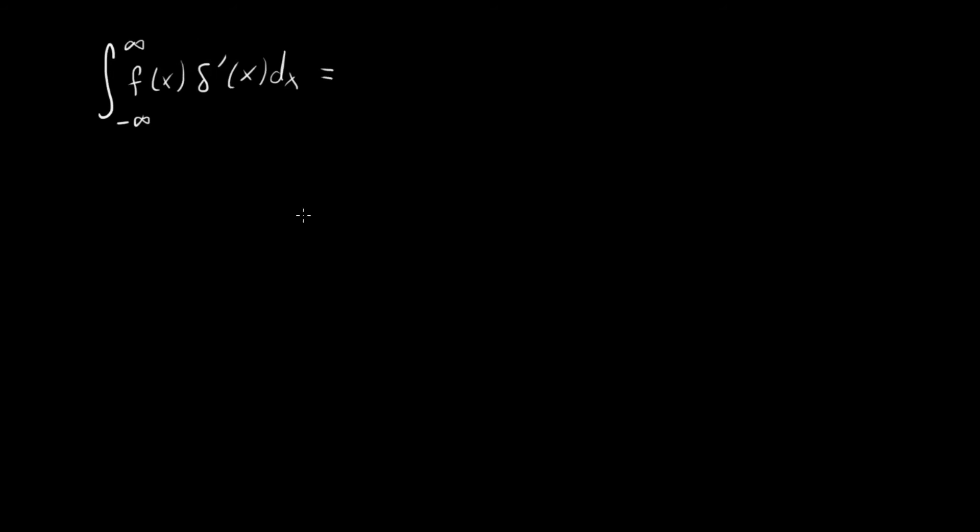Well, the thing that we always do whenever we see a derivative we don't want is use integration by parts. And so if we use integration by parts on this, what are we going to get? We're going to get f of x delta of x evaluated from minus infinity to infinity minus the integral from minus infinity to infinity of f prime of x delta of x dx. So this is nice. We've gotten rid of all delta primes on this right hand side of the equation.